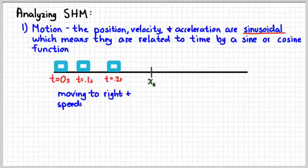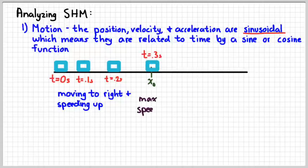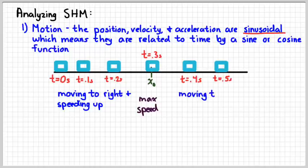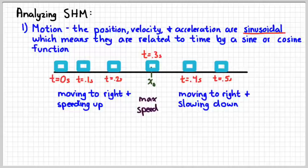And so, during this interval, our object is moving to the right and speeding up. At t equals 3 seconds, it's equilibrium. It's reached its maximum velocity, because as soon as it gets to the other side, it's going to start slowing down again, because the spring would start pushing it to the left, until it eventually comes to rest at time t equals 0.6 seconds.